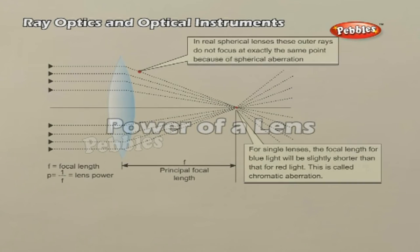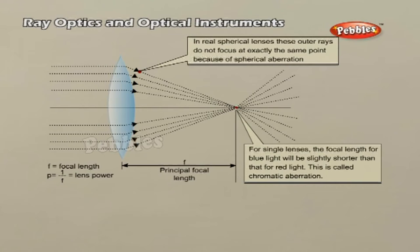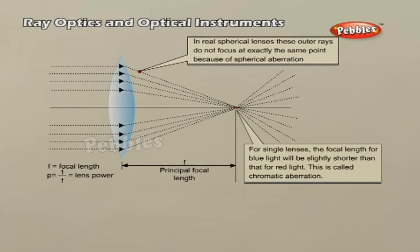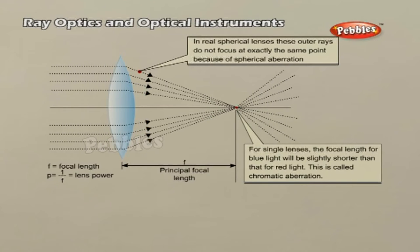Power of a lens. The power of a lens is a measure of the convergence or divergence which a lens introduces in the light falling on it. The most important characteristic of a lens is its principal focal length, or its inverse, which is called the lens strength or power of the lens. The lens power is the inverse of the focal length in meters. The physical unit for lens power is 1 per meter, which is called the diopter. It is also defined as the tangent of the angle by which it converges or diverges a beam of light falling at unit distance from the optical center.